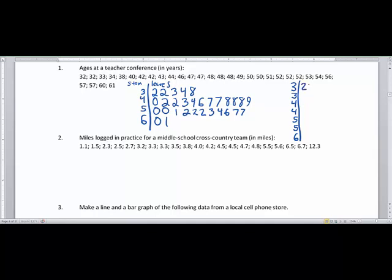So let's replicate the stem and leaf plot using this breakdown. So here I have 32, 32, 33, 34, and then 38. Then we're going to have 40, 42, 42, 43, 44. And then I have to skip down to here for the 46, 47, 47, 48, 48, 48, 49. And then 50, 50, 51, 52, 52, 52, 53, 54, 56, 57, 57. And then 60 and 61.